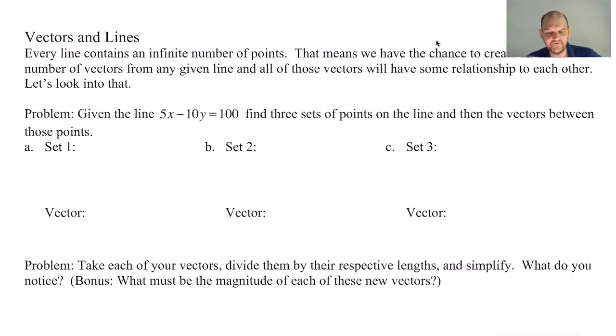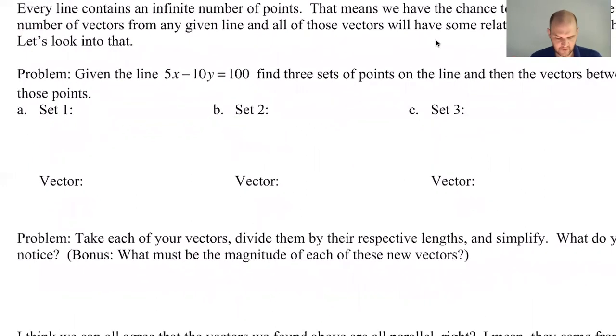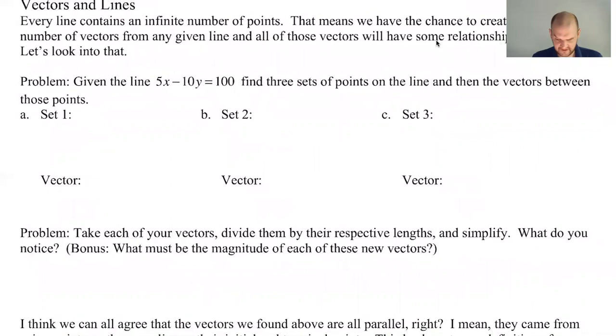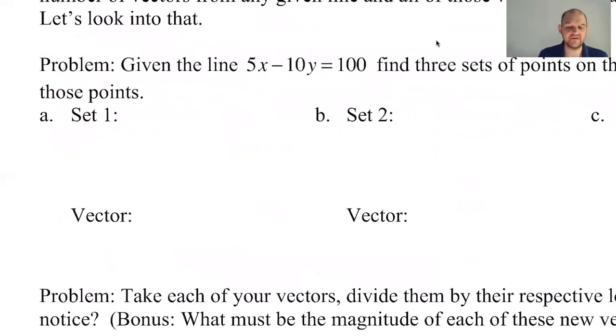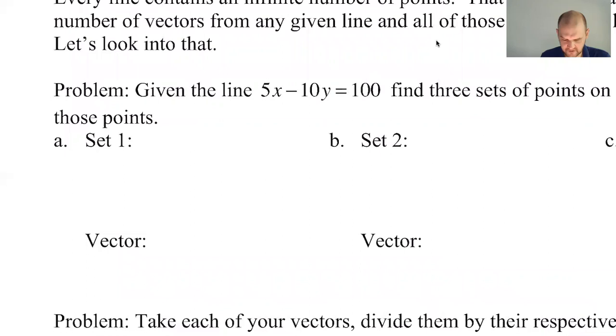you can create an infinite number of vectors from those points. That's going to be an important thing. We can pick any two points that are on a line and create a vector. All of those vectors will have something in common. First, we are given the line 5x minus 10y equals 100. I'm going to find three sets of points on the line, so we need six points on that line, and then the vectors between those points.